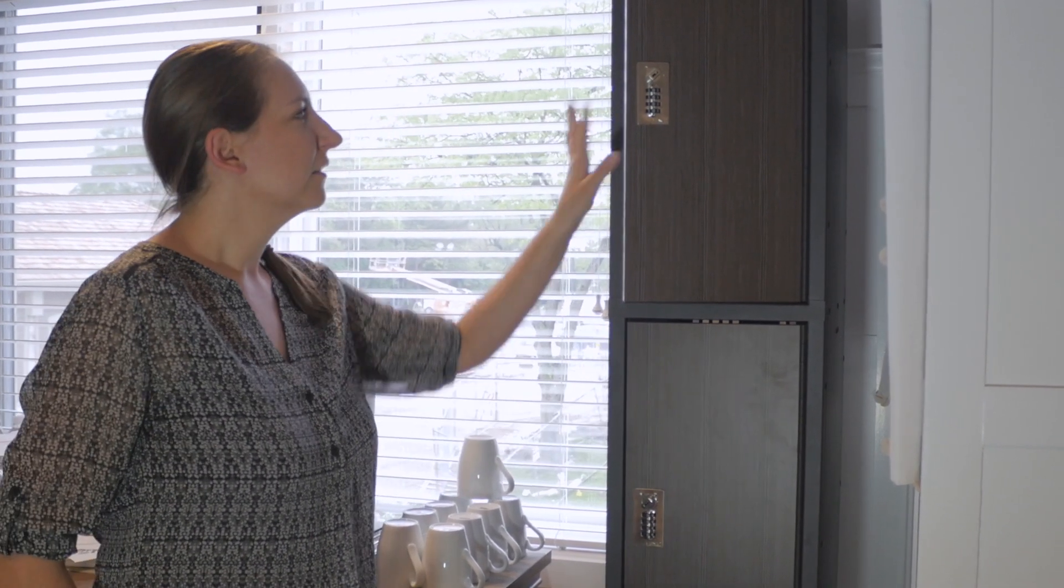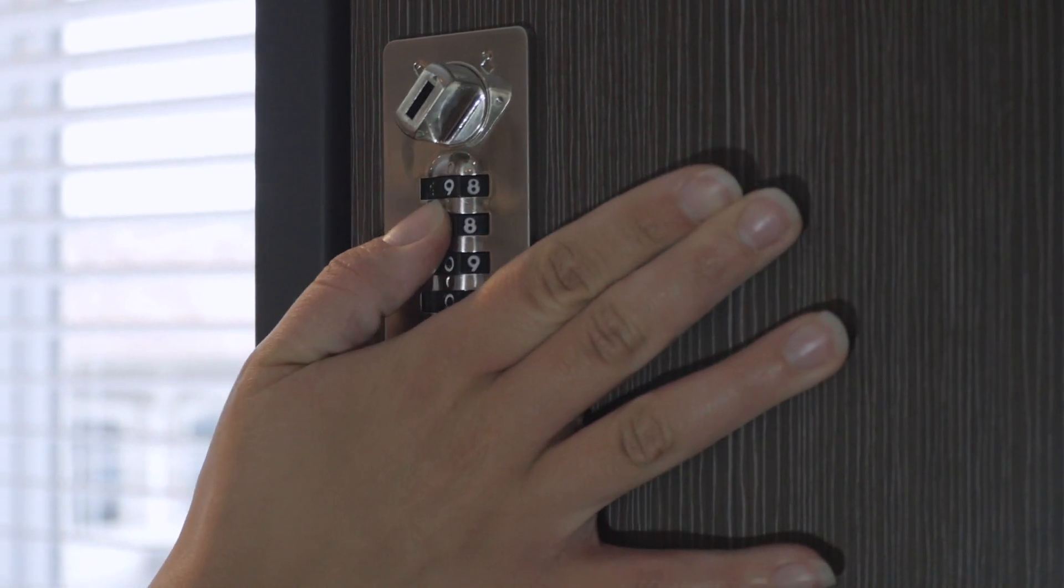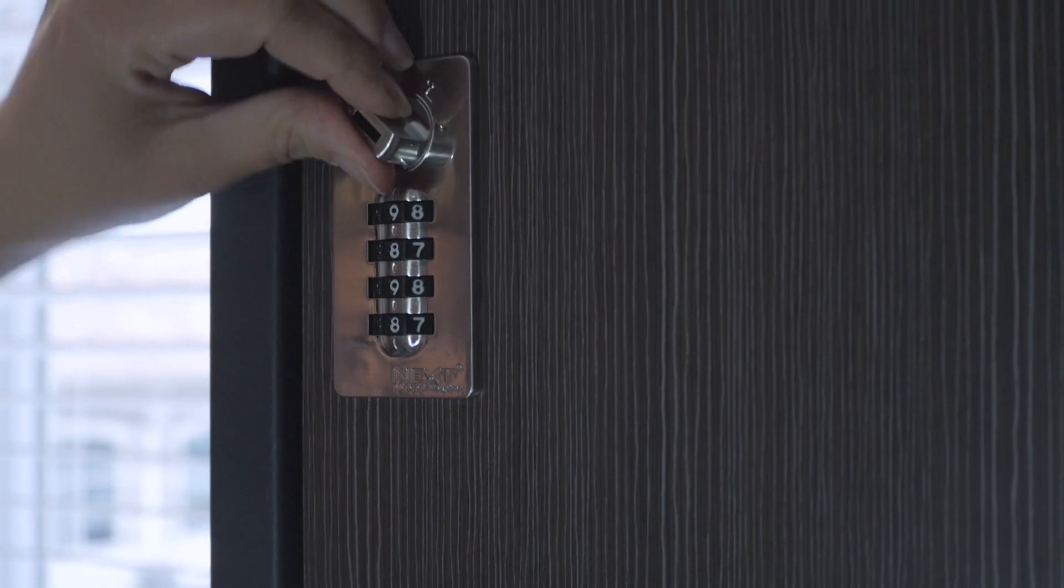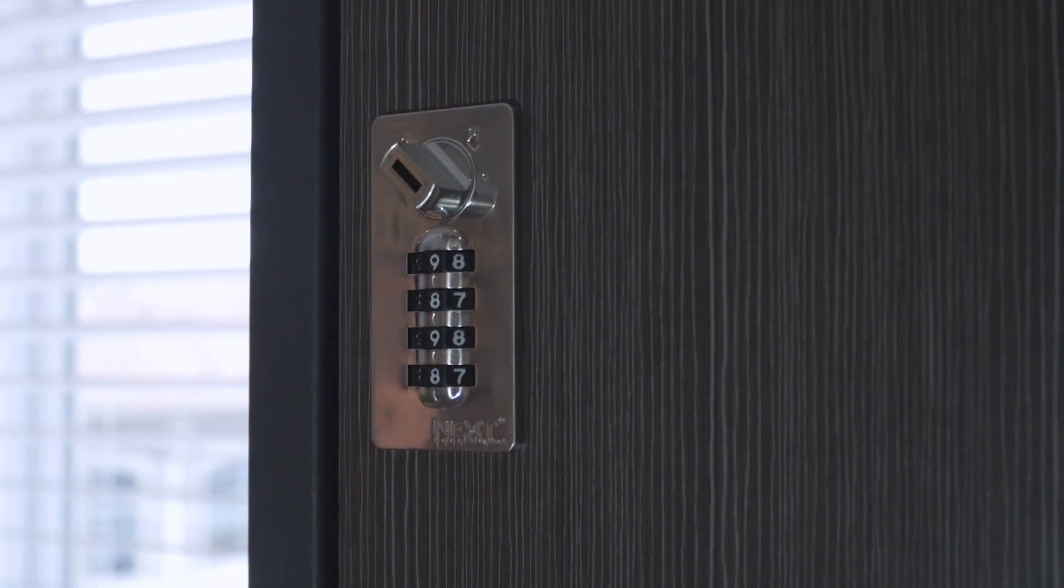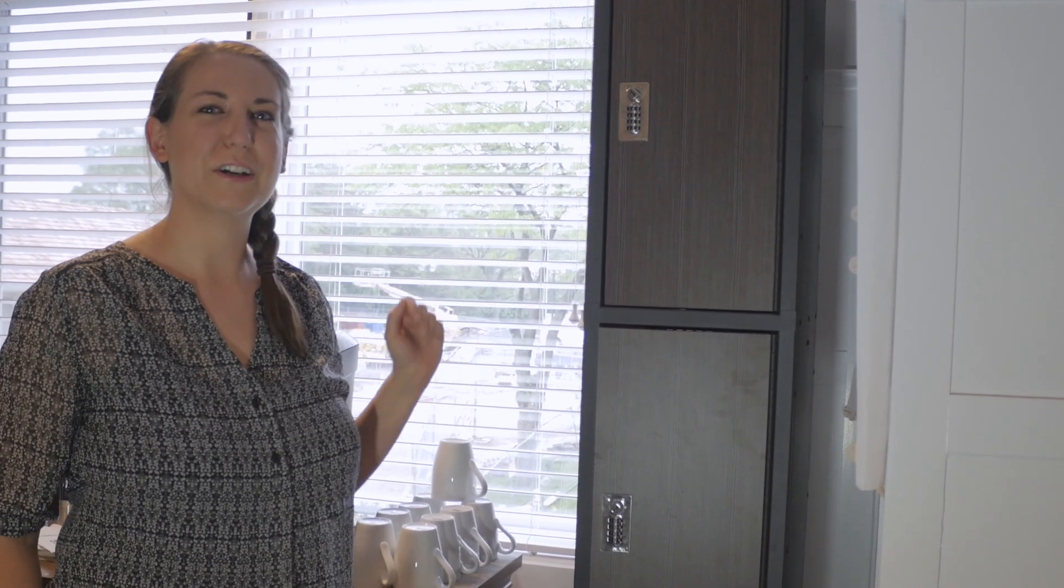All you have to do is close the door, turn the dials to a four digit number that you'll remember, and then turn the handle to lock it. And then spin the dials to anything so that nobody knows your code.